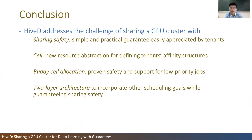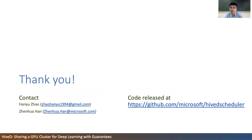To conclude, HIVED addresses the challenge of sharing a GPU cluster for deep learning with four contributions. First, defining a simple and practical guarantee — sharing safety — against the anomaly identified in production clusters, which is easily appreciated by tenants. Second, proposing cell, a new resource abstraction with which we can define and reserve affinity structures for tenants explicitly. Third, developing buddy cell allocation, an elegant algorithm with proven safety and support for low-priority jobs. And fourth, devising a two-layer architecture to separate the concerns of other scheduling goals from sharing safety, so as to strike the right balance between multiple objectives. Thank you very much.